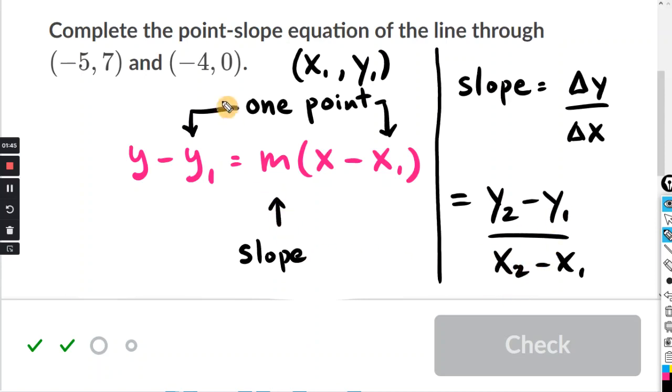And the order that you subtract the numbers doesn't matter, so long as you do each one going in the same direction. For instance, if this is point 1, then this would be point 2. So this would be x1, y1, and x2, y2. So you want to keep x1 with y1. You keep x2 with y2. Other than that, the order doesn't matter.